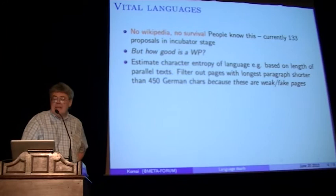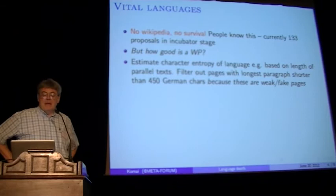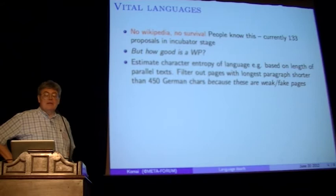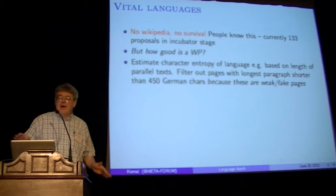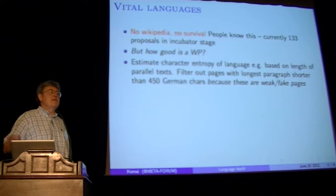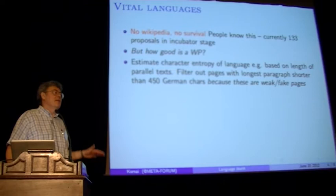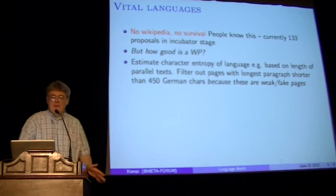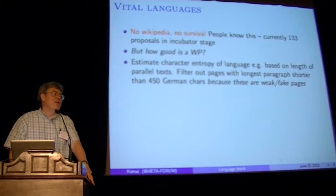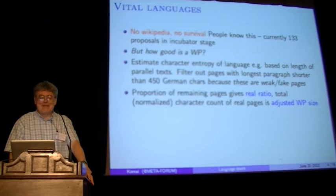Then what you do is filter out pages from the Wikipedia of that particular language where the longest paragraph is shorter than 450 German characters. We took German to be the standard for this rather than English because we think the German Wikipedia is more solid and more content- and information-full than the English Wikipedia — their editorial policies are different. This 450 German characters threshold is an arbitrary unit of entropy, but it's our threshold.